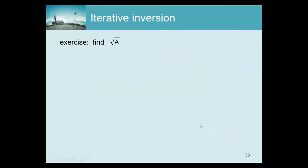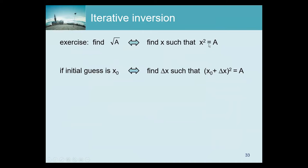To illustrate this, consider the inverse problem of computing the square root of a. For some reason, taking a square root is very difficult while squaring is easy. So we reformulate: find x such that x squared equals a. This avoids the square root. We assume an initial guess x₀ and find an update Δx such that (x₀ + Δx)² = a.